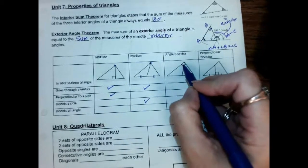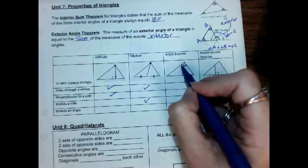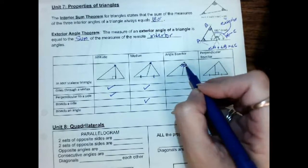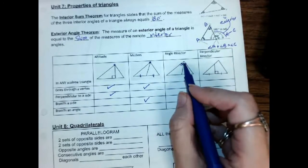An angle bisector actually cuts this angle here at the top into two equal parts. Not the bottom, but the top part. And it goes through the vertex.